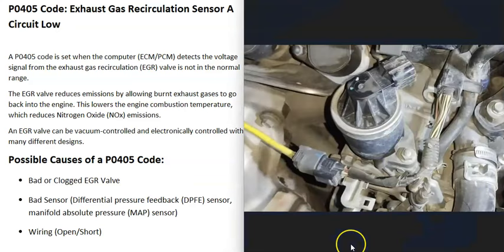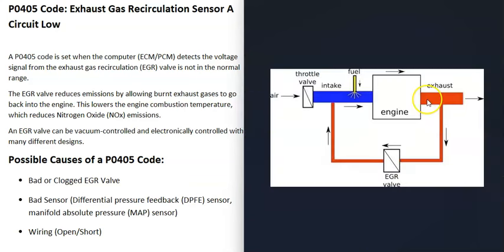Vehicles have what's called an EGR valve that takes exhaust gases and feeds them back into the engine. When these exhaust gases get fed back into the cylinders, it lowers the combustion temperature, which reduces emissions. Depending on the vehicle's year, make, and model, there can be differences — some vehicles are controlled by vacuum and some are electronically controlled.